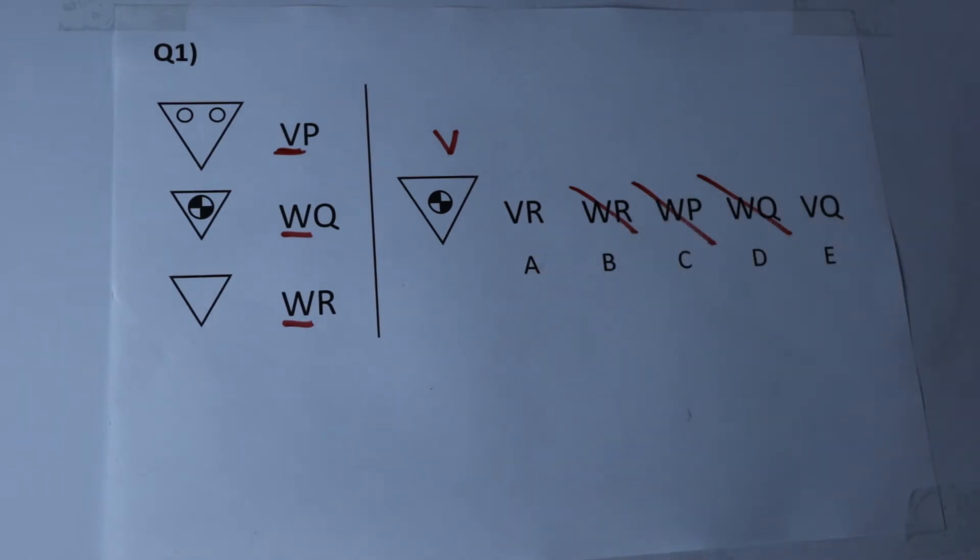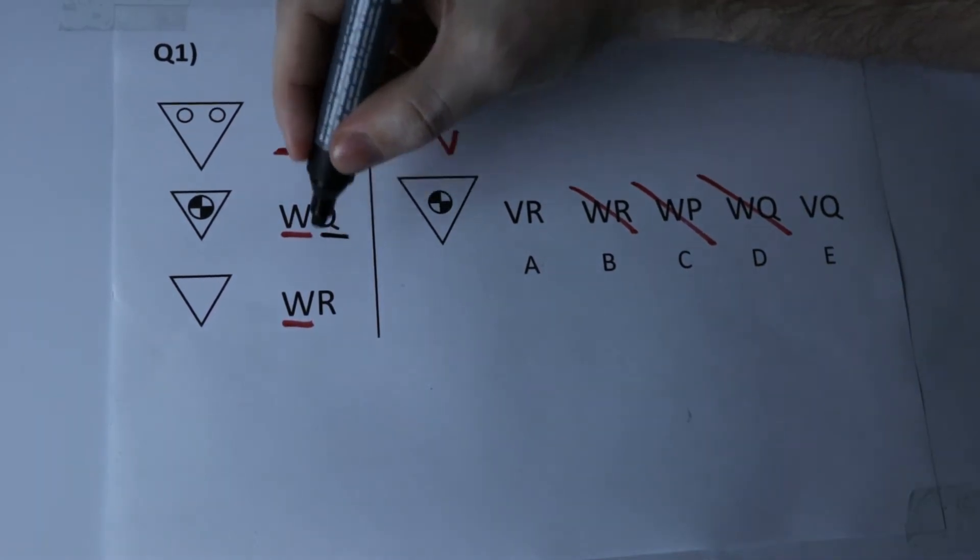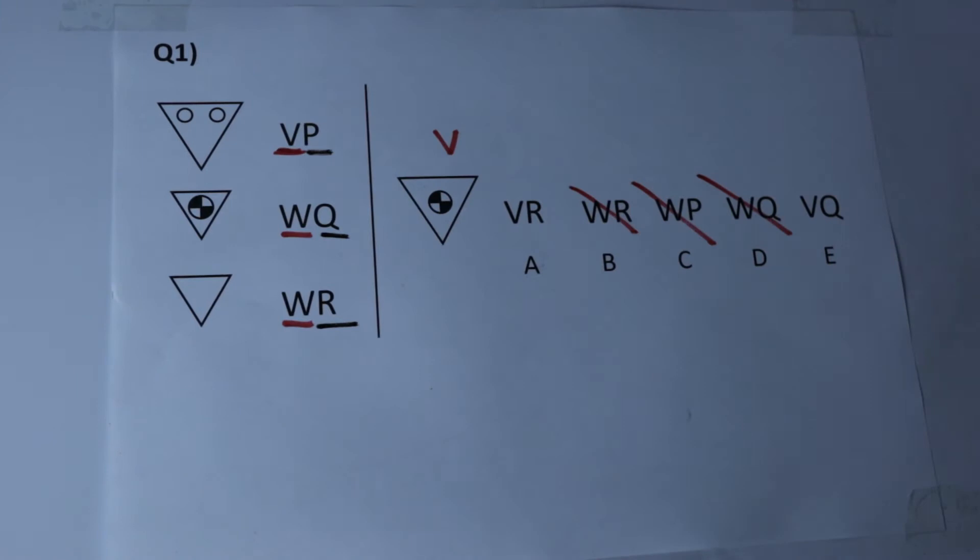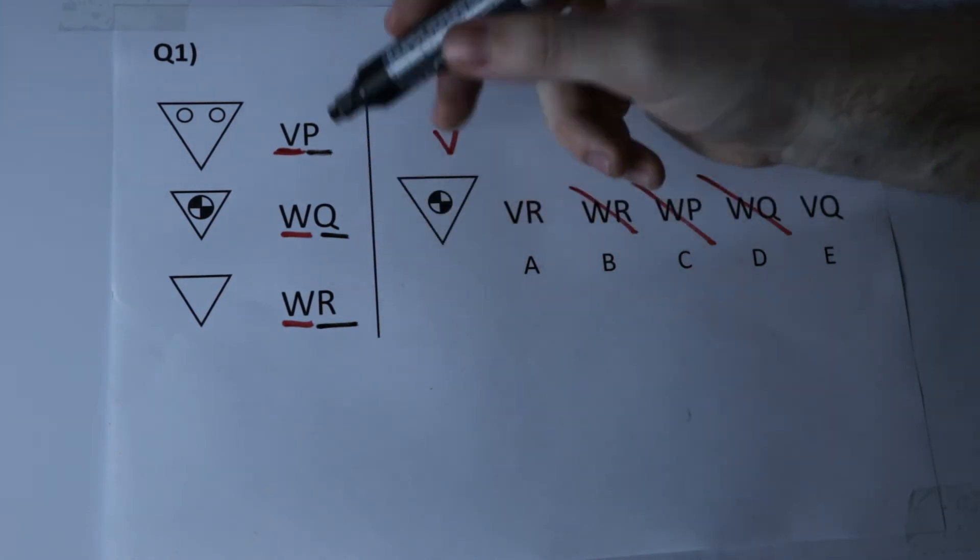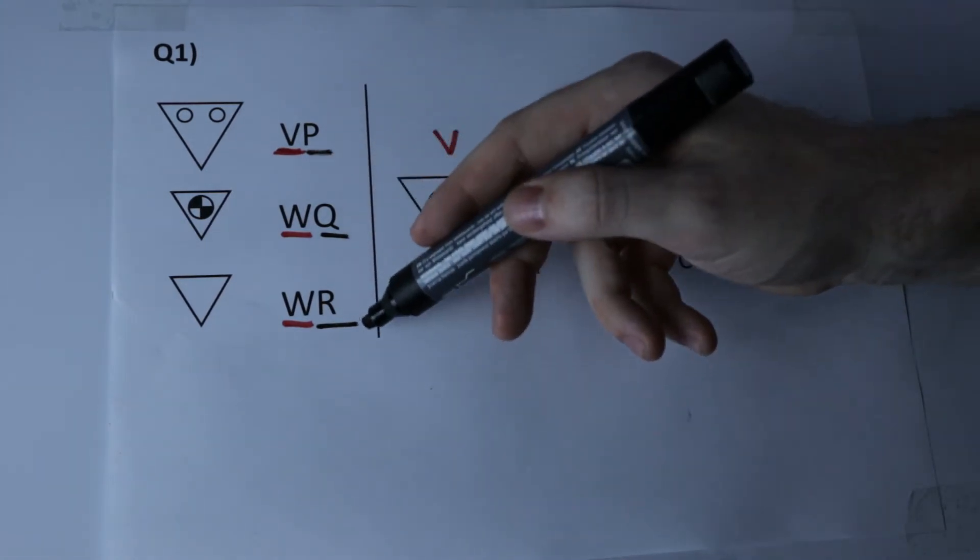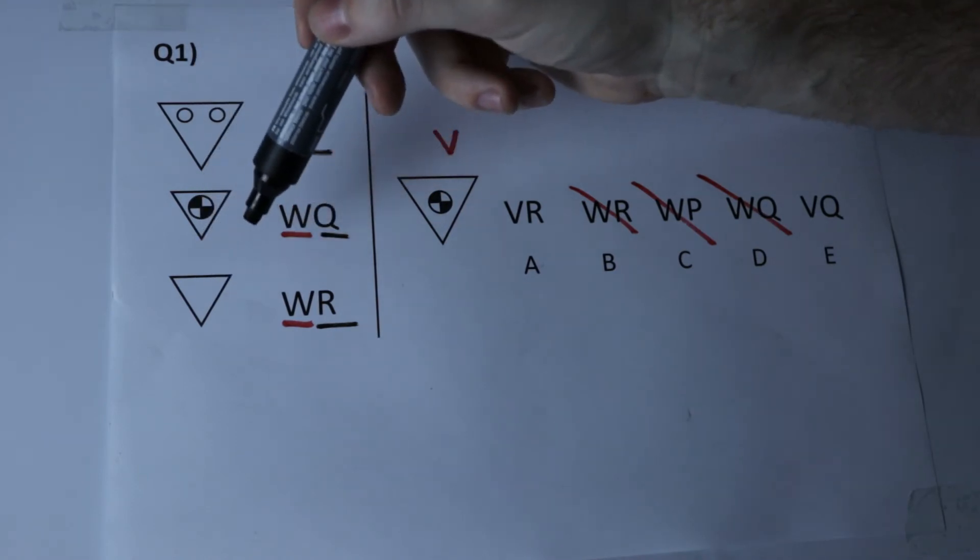Now that we've solved our first letter in the code we're going to try and solve the second. So we're going to underline just to make sure we've isolated each letter and we've got a P, a Q and an R. Now here we have three letters that are different so there must be something that's different about each of these shapes.